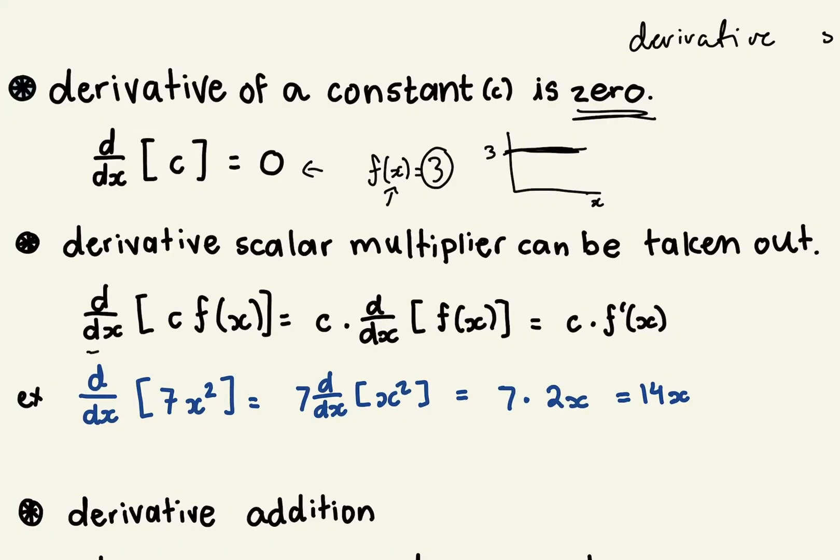So what this says is basically that the derivative of a constant times a formula or function is the same thing as you can pull the constant out and multiply it by the derivative of the function.